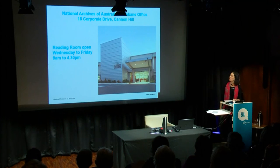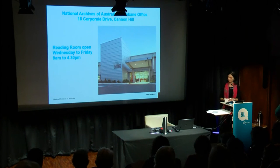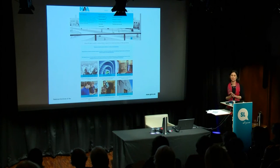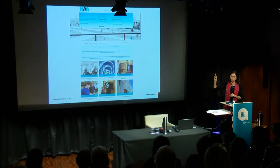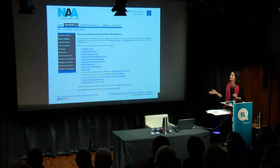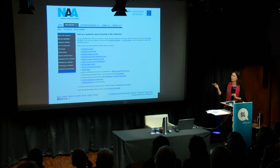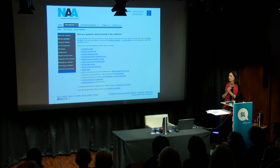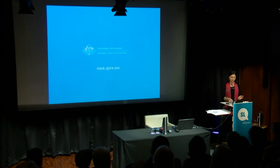This is the Brisbane National Archives office. We're located at Cannon Hill. We're open Wednesday, Thursday and Friday from 9 till 4.30. If you're searching for passenger arrival lists and need some help, you can go to the Collection tab and click on Ask Us a Question. We have different categories — you can click on Immigration Records or Passenger Arrival Records, enter as much information as possible about what you're trying to look for. We aim to respond to inquiries within 30 business days. Thank you.